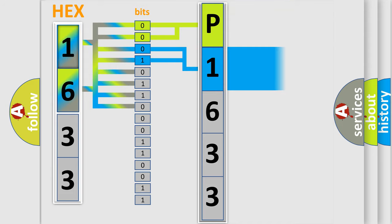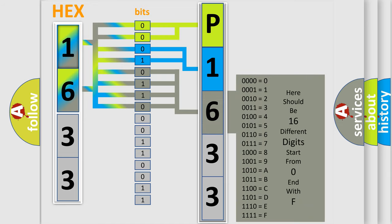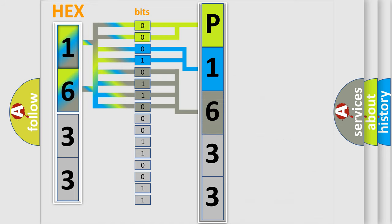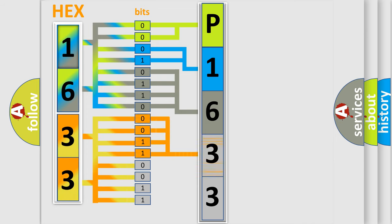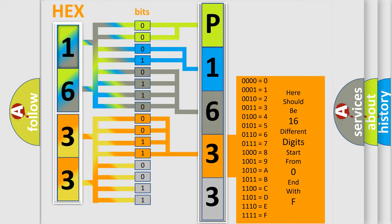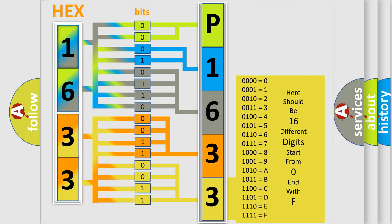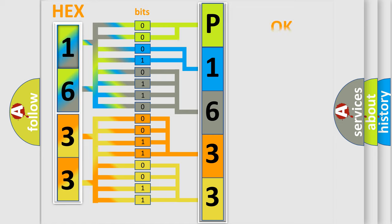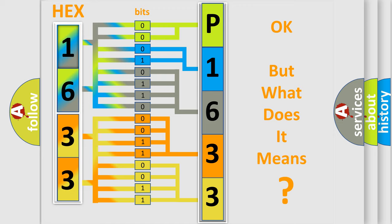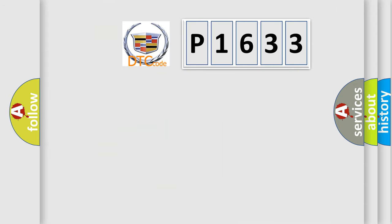The next two bits determine the second character. The last bits of the first byte define the third character of the code. The second byte is composed of a combination of eight bits. The first four bits determine the fourth character of the code, and the combination of the last four bits defines the fifth character. A single byte conceals 256 possible combinations. We now know in what way the diagnostic tool translates the received information into a more comprehensible format. The number itself does not make sense to us if we cannot assign information about what it actually expresses.